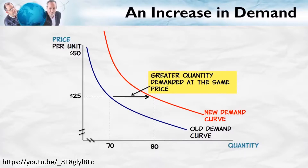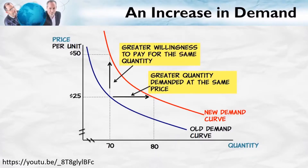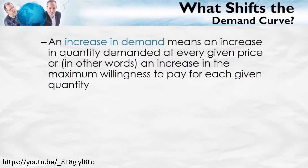We can also read an increase in demand using the vertical method — at every quantity, there is a greater willingness to pay. For example, for the 70th unit, people were willing to pay $25. Now with the new demand curve, people are willing to pay $50 for that unit. To review: an increase in demand means an increase in the quantity demanded at every price, or equivalently, an increase in the maximum willingness to pay for a given quantity.